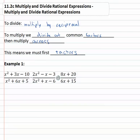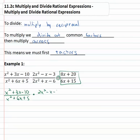Because we know that to divide really means we multiply by the reciprocal of that next term. So let's keep everything else the same: x squared plus 3x minus ten over x squared plus 6x plus five, times 2x squared minus x minus three over 2x squared plus x minus six, and now instead of divide it's times the reciprocal: 6x plus 15 over 8x plus 20.